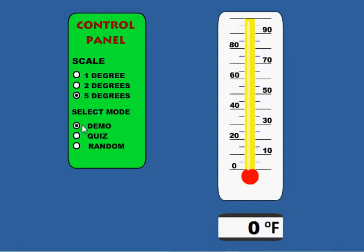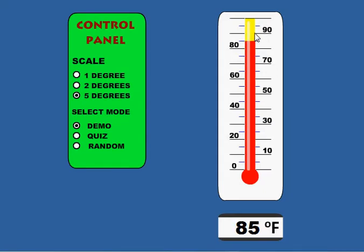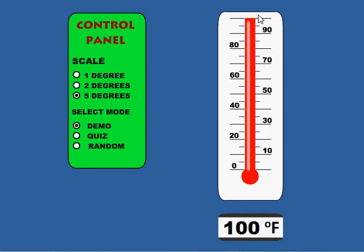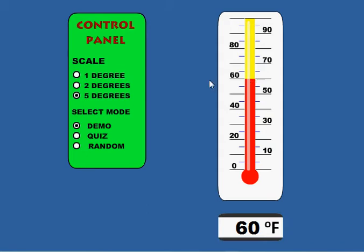So in demo mode, which we're in right now — you can see by the fact the radio button is clicked — this is just a way of showing what the temperature is on the thermometer and what the corresponding temperature in degrees Fahrenheit is. You can change the temperature by clicking anywhere in the thermometer, or you can also drag and drop the red liquid to put whatever temperature you want. That's how demo mode works.